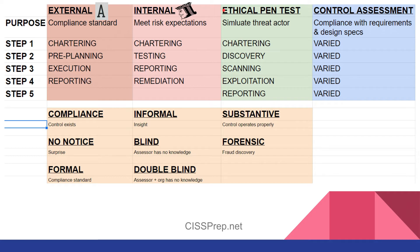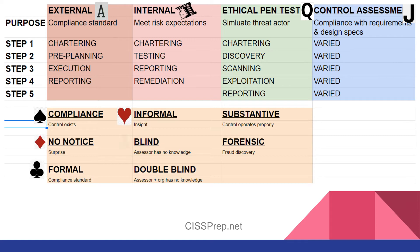Ethical pen tests are done to simulate an attacker or threat actor — this would be our queen card. In practical terms, these are usually external and formal. Control assessments are done to verify compliance with requirements and design specs — the jack card — and follow a combination or variety of steps depending on corporate needs. Down below, the various secondary assessment types can be combined with the four above. For example, an external audit can also be a compliance audit — giving you an ace of spades. Or an ethical penetration test combined with a blind or double-blind test gives you a queen of clubs or queen of diamonds.